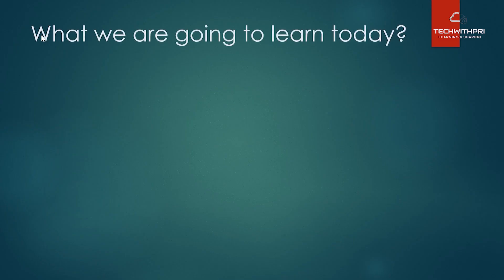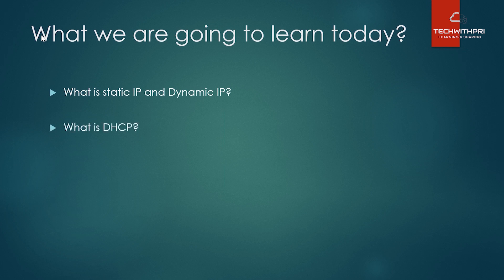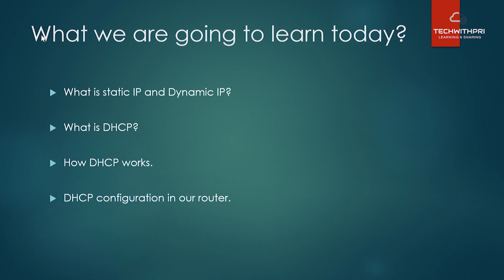Today we'll first understand what static IP and dynamic IP are — that's very important before going into DHCP. Then we'll understand what DHCP is and how it works. Finally, we'll see DHCP configuration in a real router. In the next video we'll configure a DHCP server on Windows Server and join a client machine.